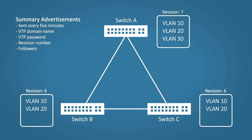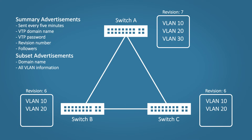Switch A will send out a summary advertisement with the new revision number. This message also tells the other switches that an update message will follow, using the followers field. Switch A then sends a new type of message called a subset advertisement, which contains the VTP domain name and the VLAN information so the other switches can synchronize their databases. If there are several VLANs to be added, multiple subset advertisements may be sent. Once Switch B and C update their VLAN databases, they also send out a new summary and subset advertisement to inform any switches downstream from them.